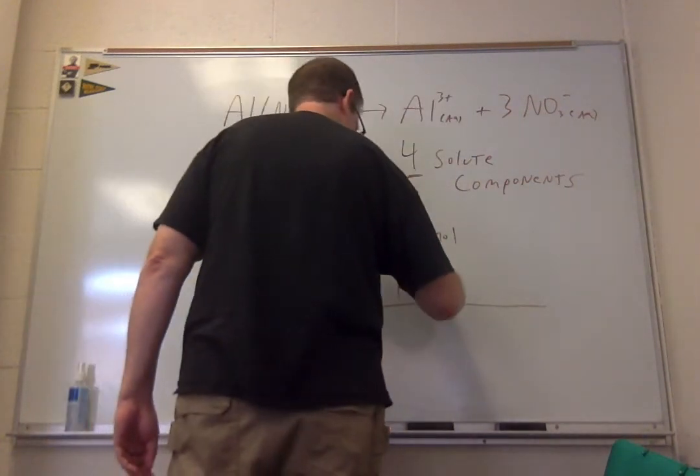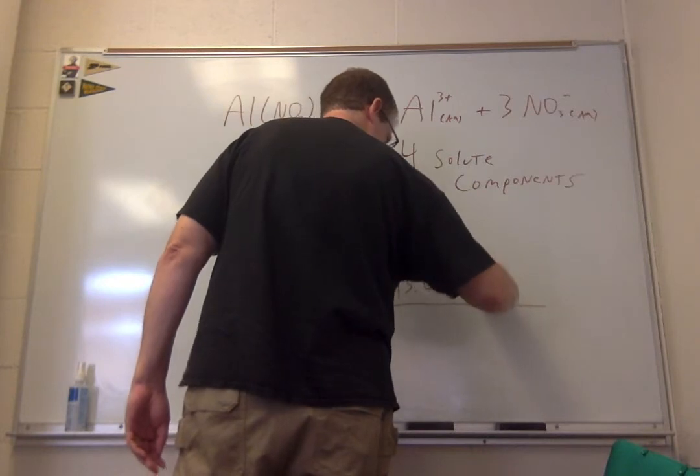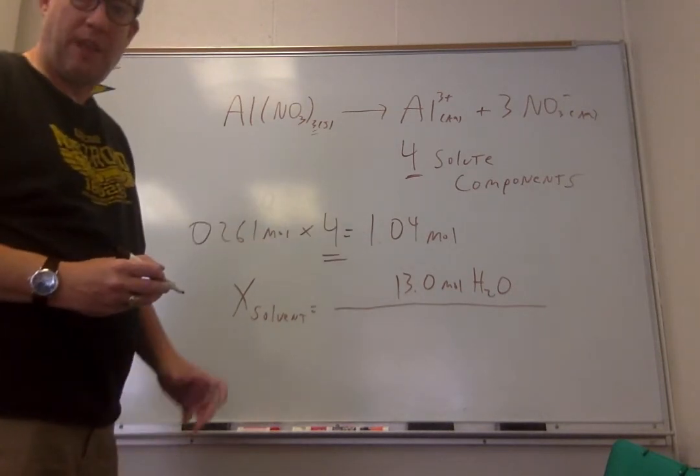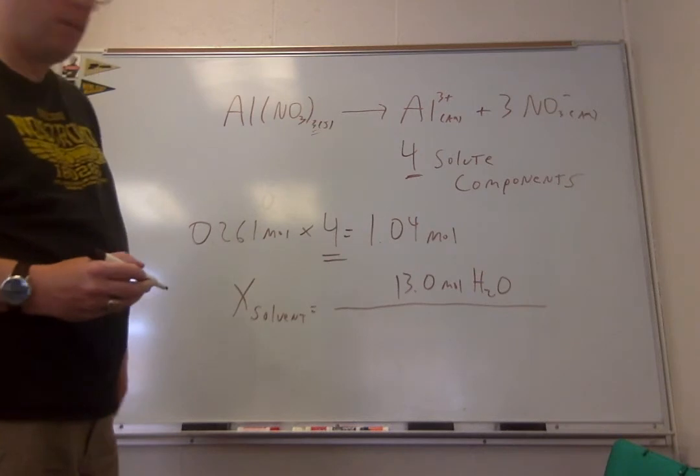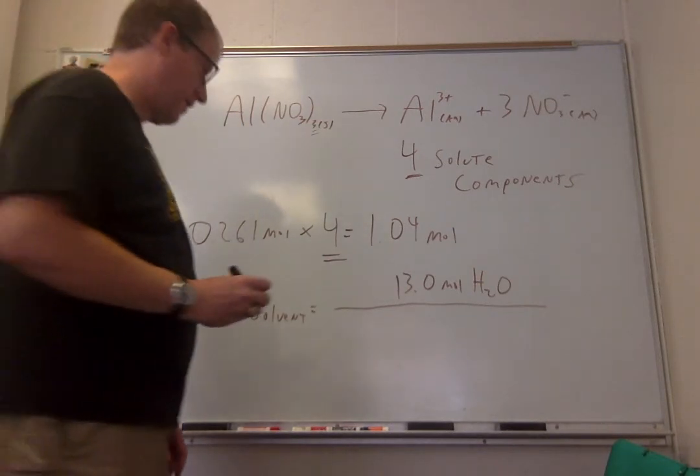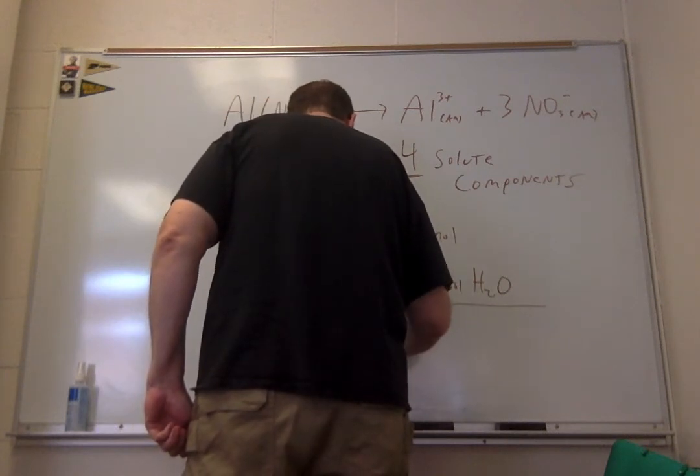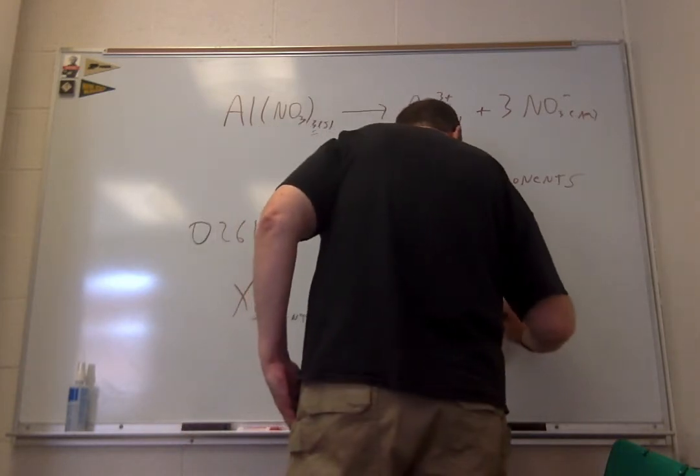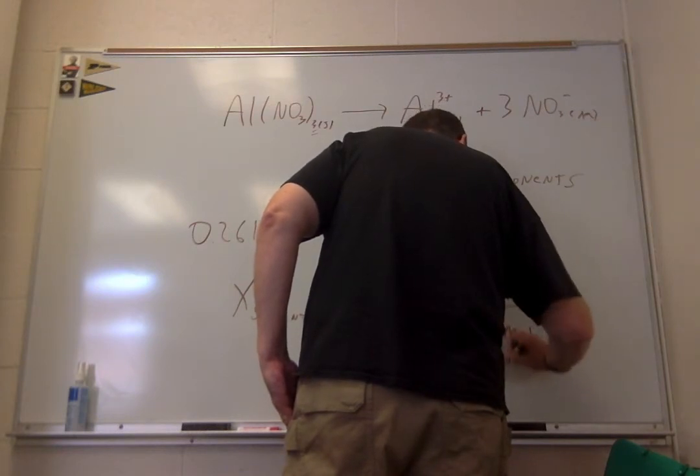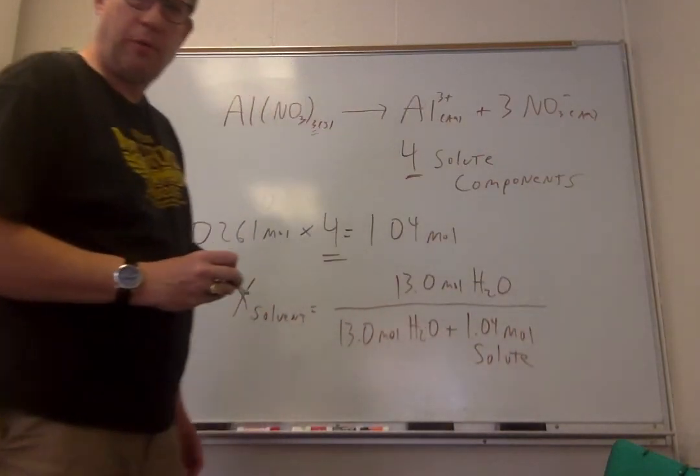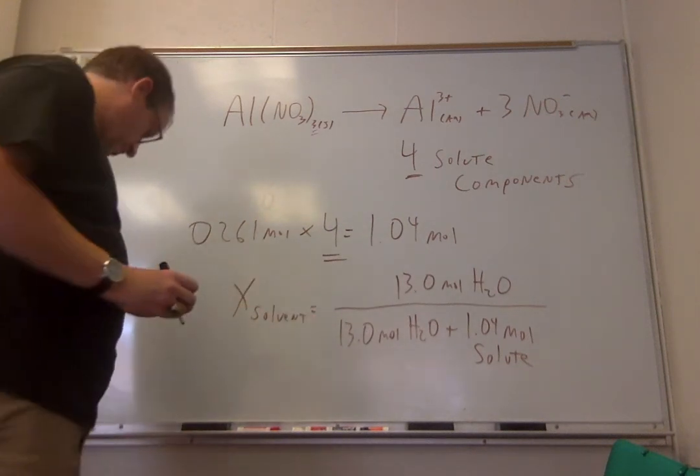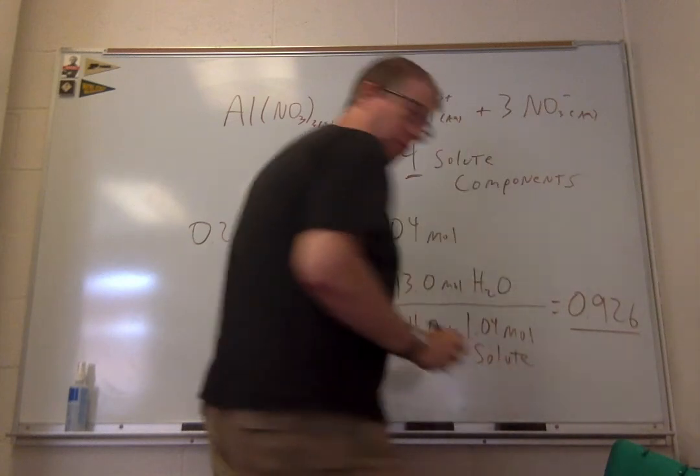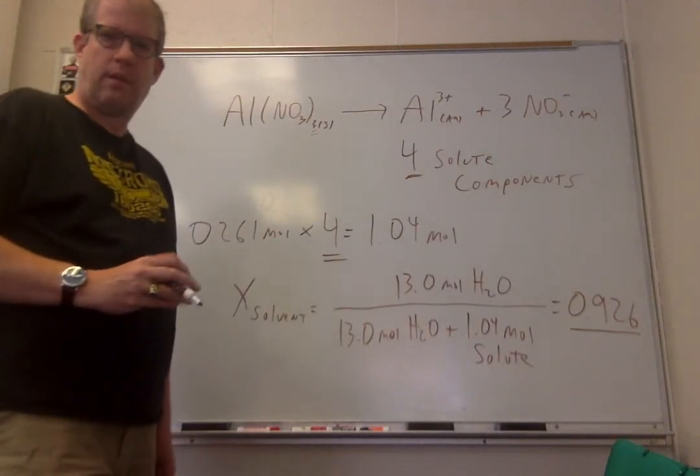What we do is we take 13 moles of water, which we have, and we add that to the moles of solute components, not the moles of aluminum nitrate. 1.04 moles of solute and add it to 13 moles of water, and when you do that, your mole fraction is 0.926, dimensionless number.